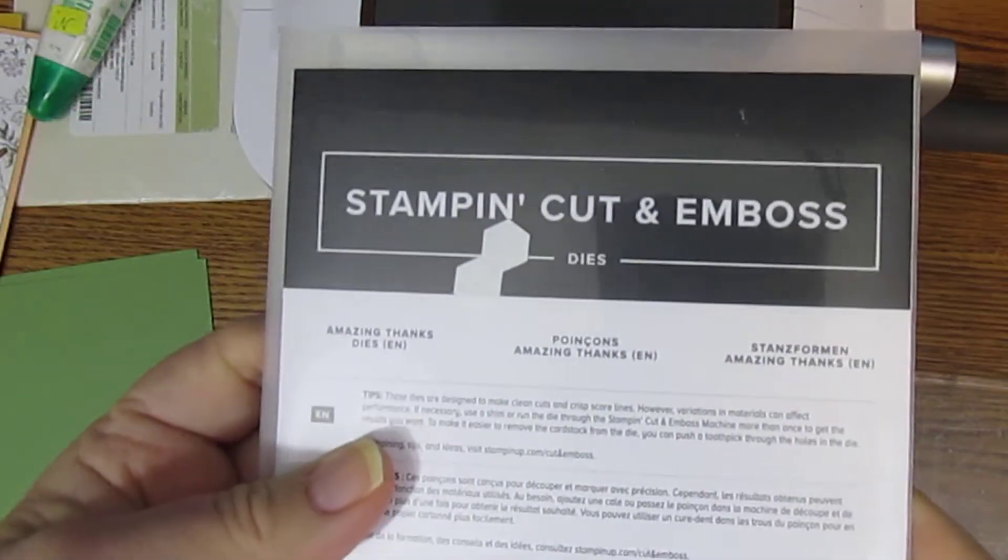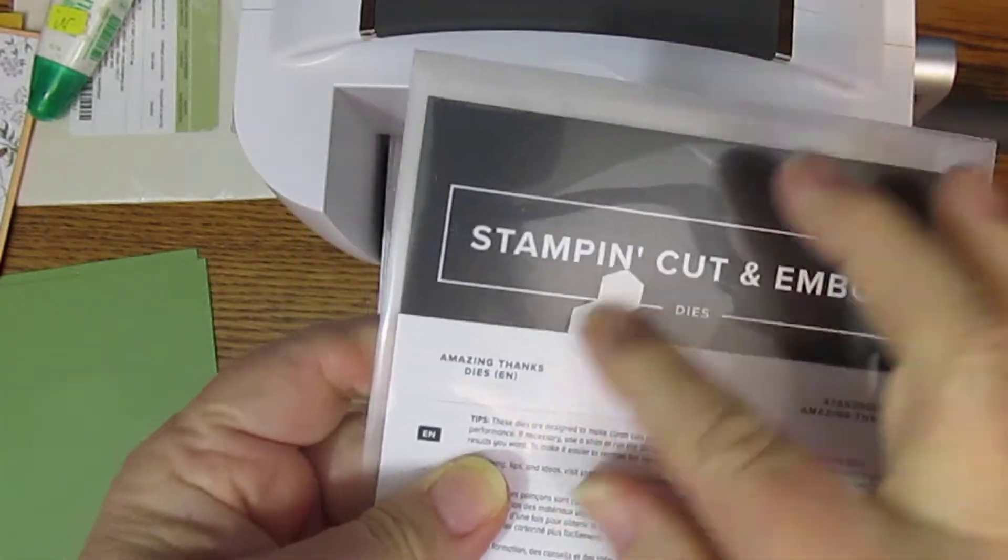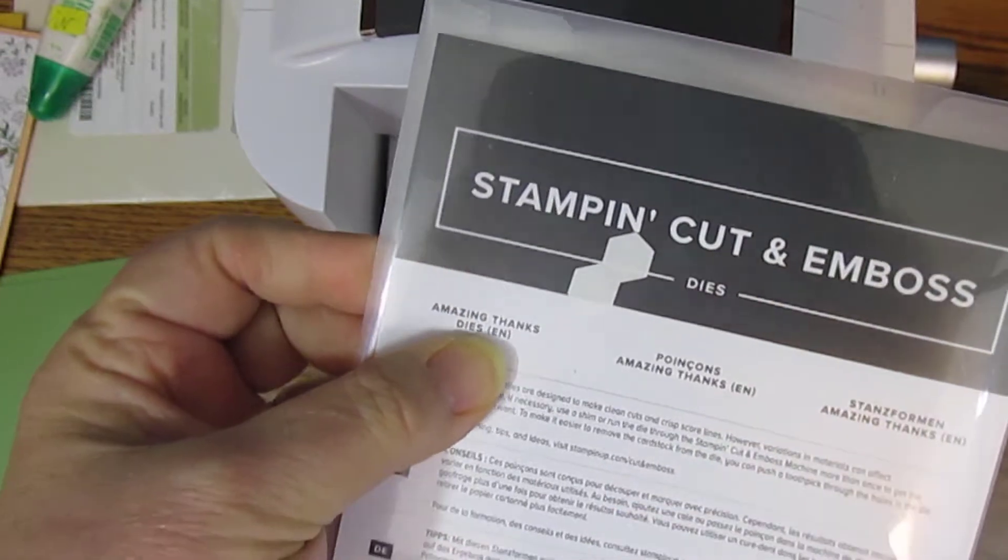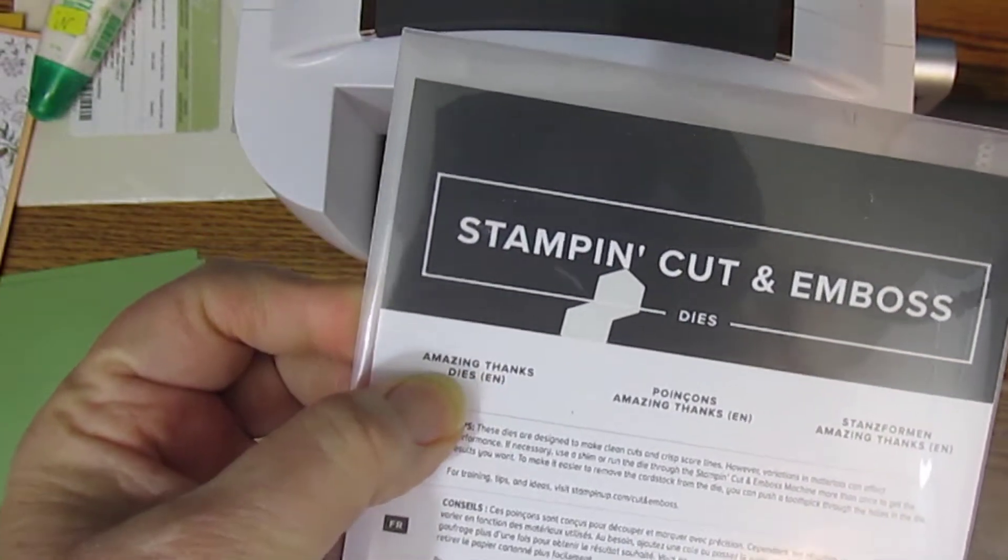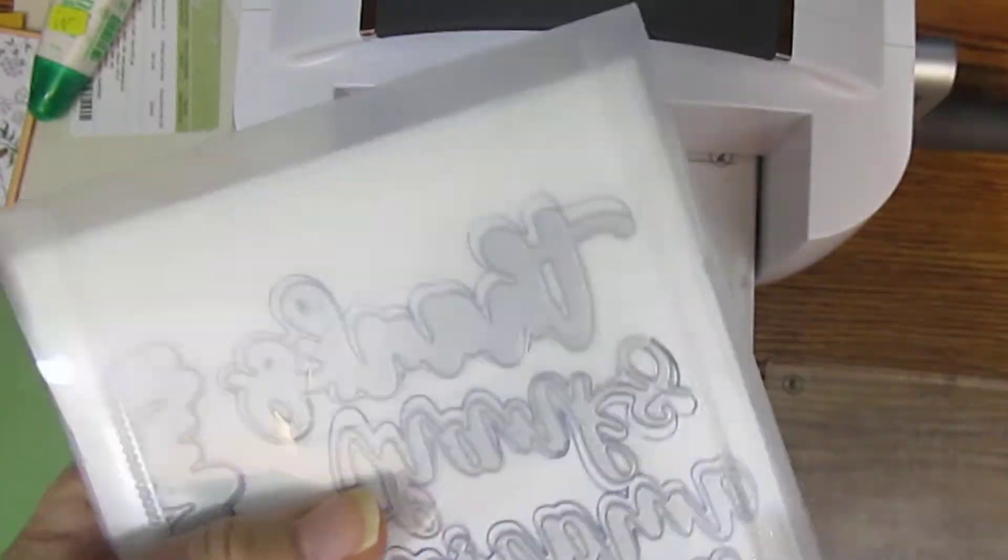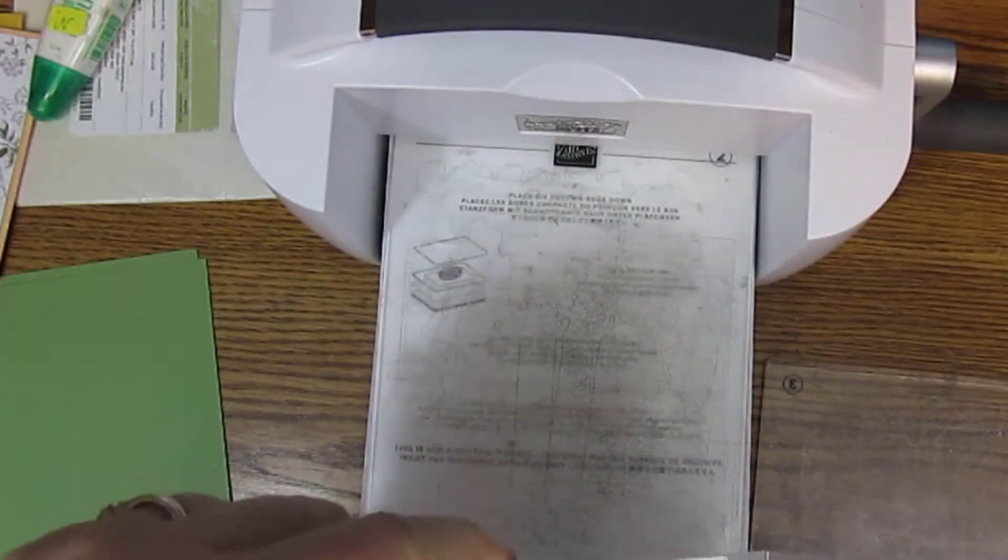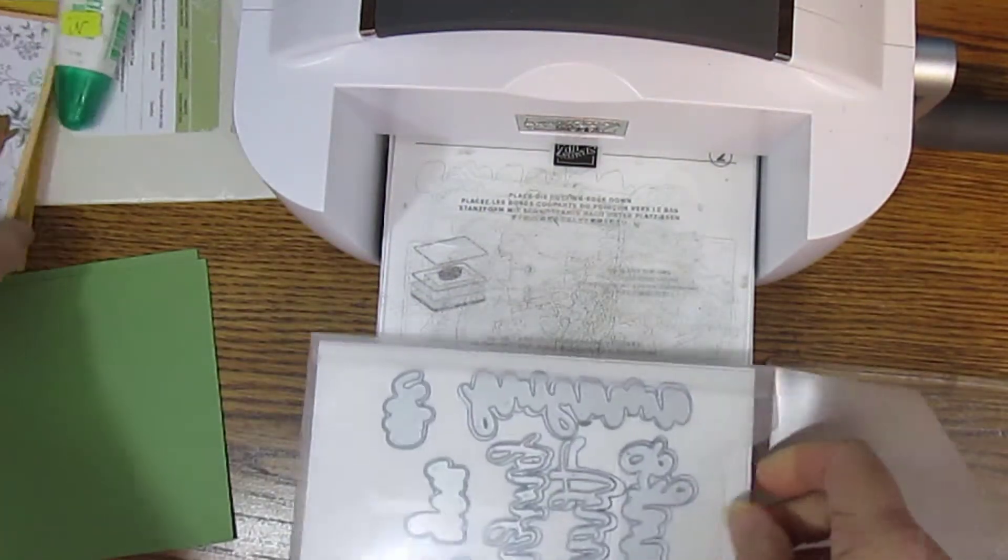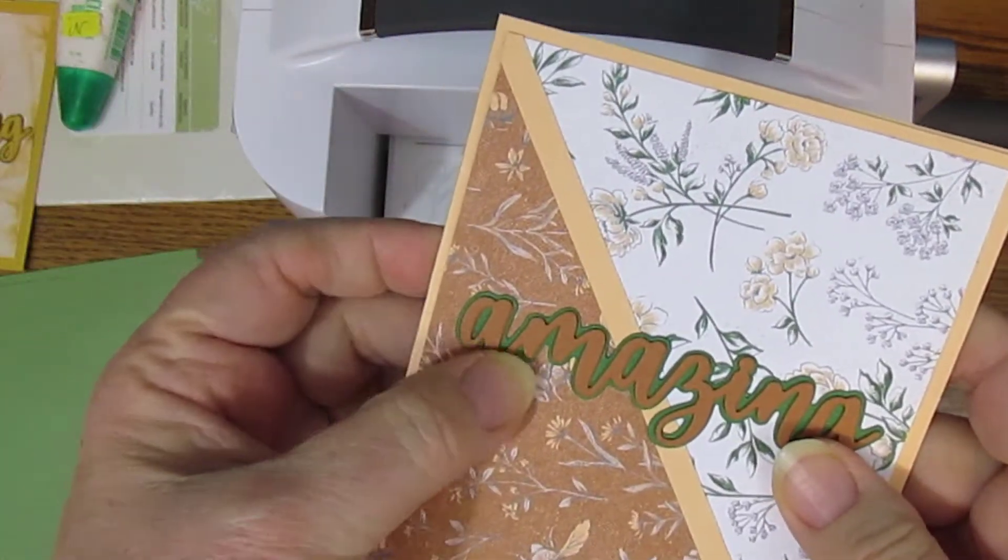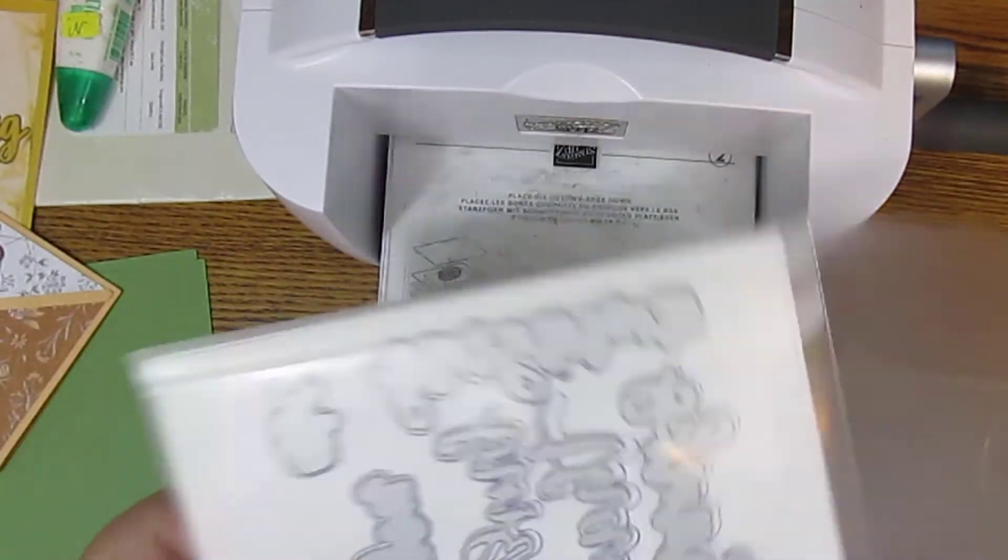We are using the Amazing Thanks dies. I guess I got Stampin' Dimensional Bags on there. It is part of the Amazing Silhouettes bundle but you can buy them separately. They have the bottom layer which is these more solid dies and then the top layer are the detailed dies.